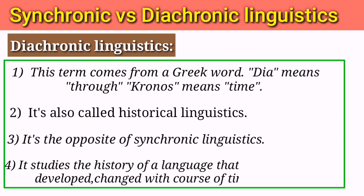In the diachronic approach, we study the historical development of a language — how a language has changed through different periods of time. As you know, a language changes with the passage of time, and when we study how that language has changed and developed over time, that approach is called diachronic linguistics. In simple words, diachronic linguists look at the historical context of a language, including its origin, evolution, and historical relationship with other languages.